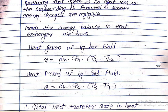We can write the energy balance equation: heat given up by the hot fluid is Q = M_dot_H × Cp_H × (T_H1 − T_H2). The same amount of heat is received by the cold fluid, so heat picked up by cold fluid is Q = M_dot_C × Cp_C × (T_C2 − T_C1). Here T_C2 minus T_C1 is used because the outlet temperature of the cold fluid is greater than its inlet temperature.